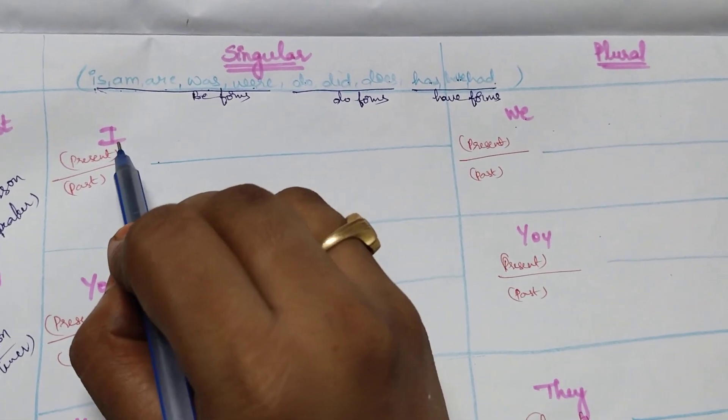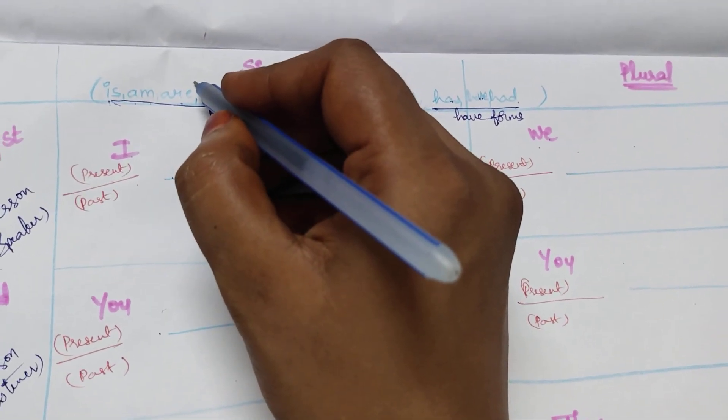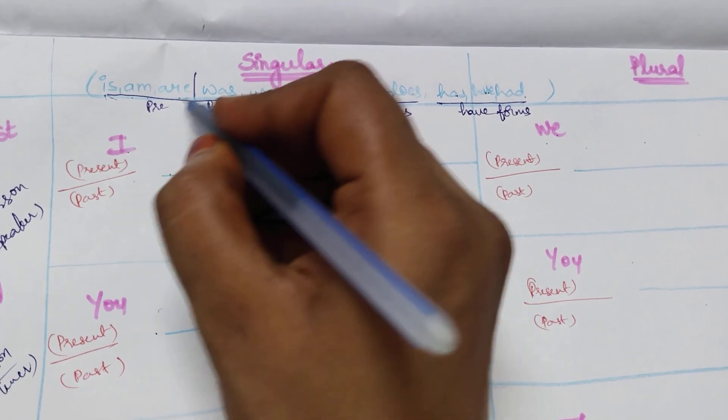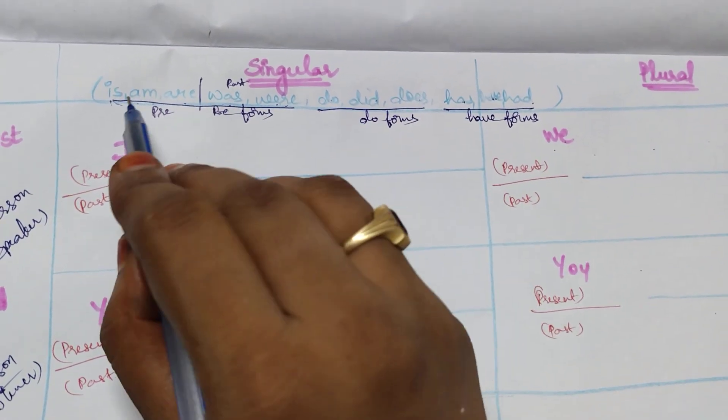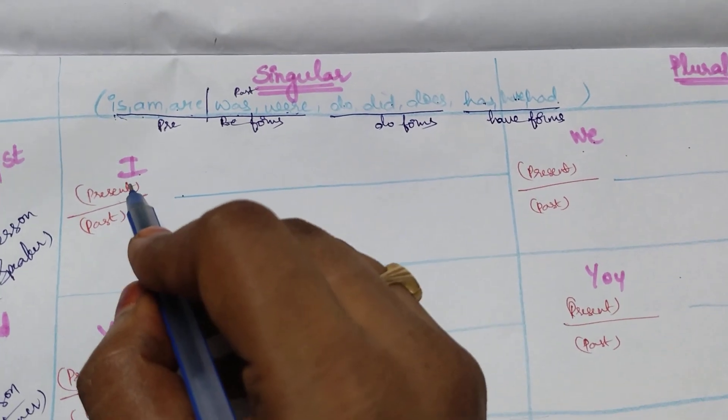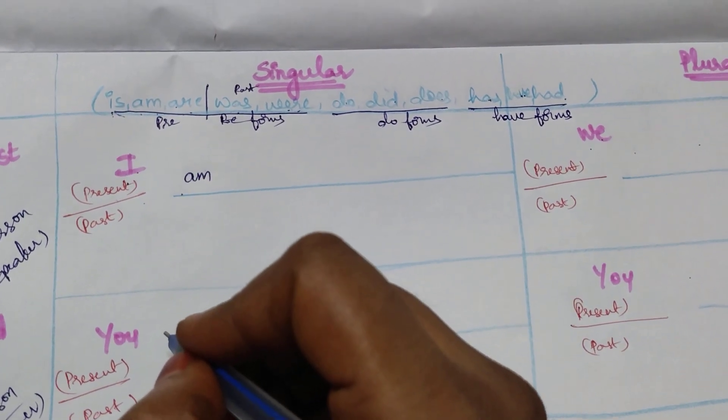Now when I is subject in present, what should I take? This is for past. So this is present, this is past. Among be forms, these three are for present, these two are for past. So what should I take when I is the subject? Am. Right?